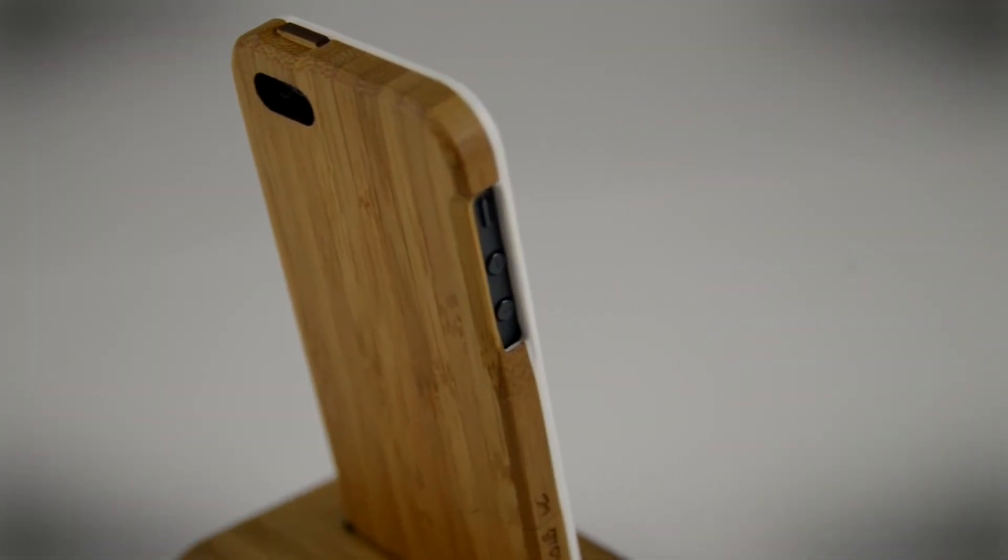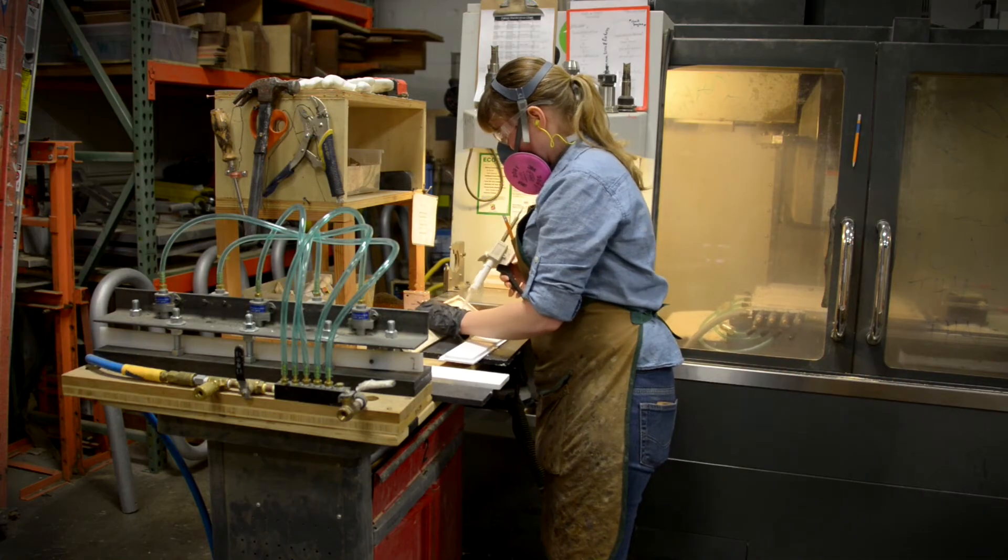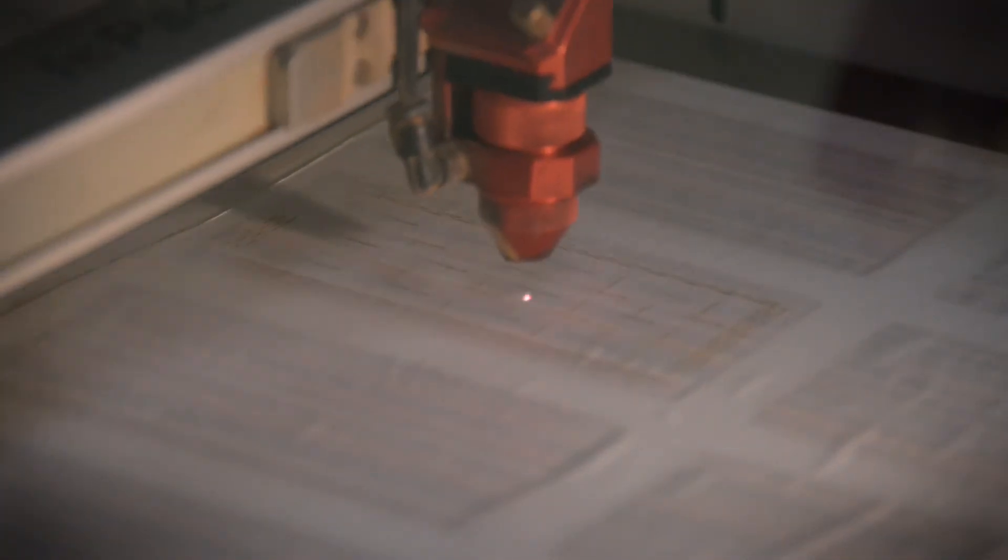Even though they make iPhone cases, Grove's founders don't consider it a tech company, but they don't see their products as retro either. I don't care if it's an old technique or a really modern mechanized technique. To us, we're about just doing the best job possible. If that means doing it by hand, we're gonna do it by hand. If that means machines are doing it, we're gonna use machines.